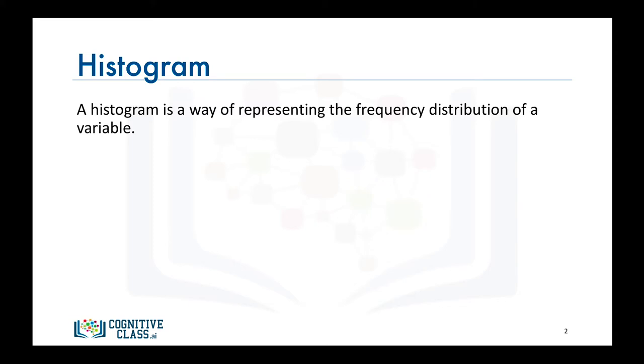It assigns each data point in the data set to a bin and then counts the number of data points that have been assigned to each bin. So the vertical axis is actually the frequency or the number of data points in each bin.